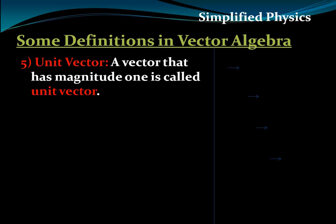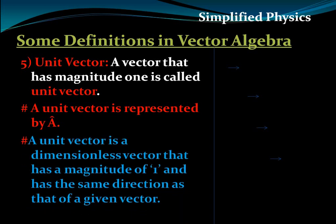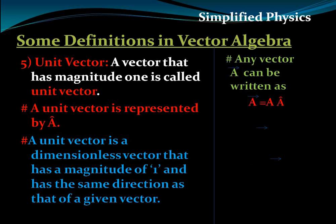Unit vector: a unit vector has unit magnitude. For a vector A, the unit vector is represented as A-cap; similarly B-cap, C-cap, and so on. A unit vector is a dimensionless vector but has magnitude one, and its direction is the same as the given vector. For any vector A, we can write: A-vector equals magnitude of A times unit vector A-cap. Also, the unit vector A-cap equals A-vector divided by its magnitude.